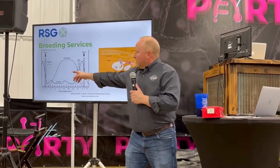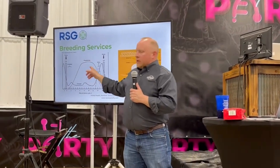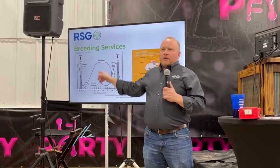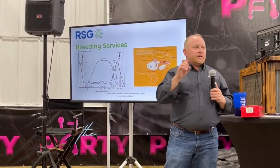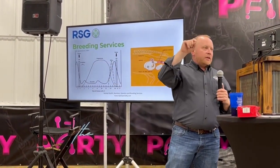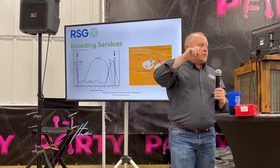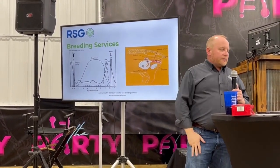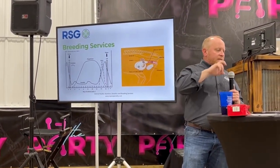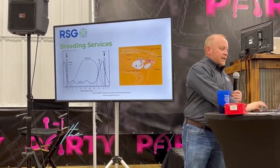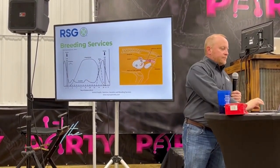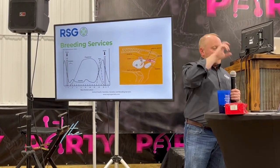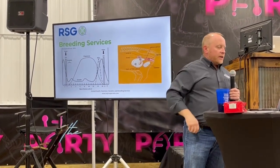So the dotted line in the middle — that's progesterone. The CIDR is going to release that progesterone product. That's the synthetic progesterone that we're going to give them.